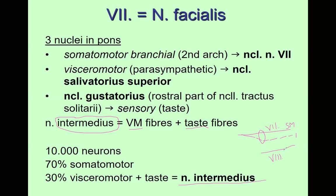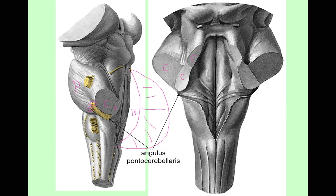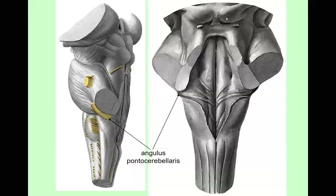These nerves leave the brainstem together in the area between the pons and cerebellum — the pontocerebellar angle. The cerebellum is connected via peduncles, forming the roof of the fourth ventricle. The facial nerve leaves in the angle between the pons and cerebellum, which is why we call this area the pontocerebellar angle.